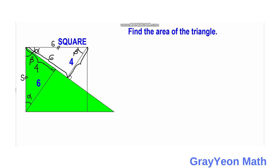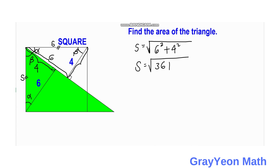From that, we can solve for s, the side of the square, which is also the hypotenuse of the triangle. For the unshaded triangle, the legs are six and four, so six squared plus four squared equals s squared. Therefore s equals the square root of 36 plus 16, which is the square root of 52, equal to the square root of 4 times 13, so s equals 2√13.